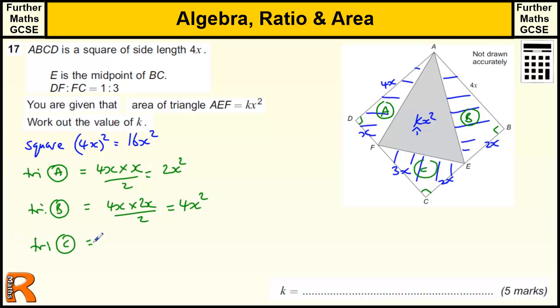And triangle C, we have 3x times 2x all over 2, so that's going to be a half of 6x squared, which is 3x squared.